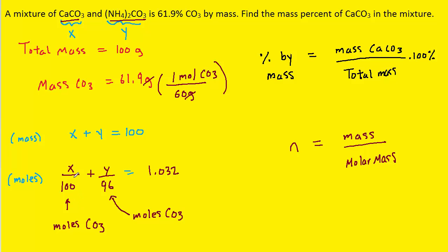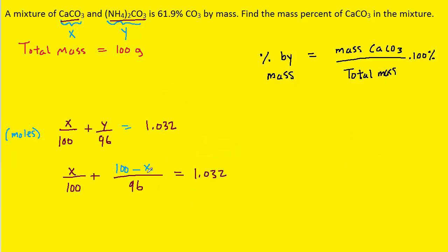The moles of carbonate from the first compound plus the moles from the second compound equals the total moles of carbonate in the mixture — 1.032. We now have an algebra problem. Taking the first equation and solving for y by subtracting x from both sides, we get y equals 100 minus x. We plug that expression into our second equation.